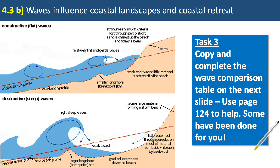Here we have a diagram showing constructive waves and another showing destructive waves. Constructive waves are described as flat and destructive waves as steep, and you can start to think about the capacity for each type to either erode or deposit along a coastline. When you do this activity, have a good read of the annotations, which will enable you to complete the wave characteristics table on the next slide. Please don't jump into that activity without reading page 124, which I've scanned and added to the end of this PowerPoint document.